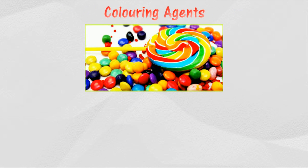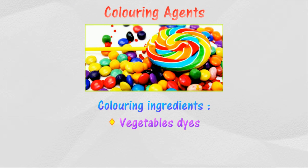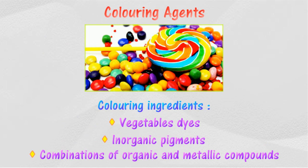Food additives: food coloring is added to enhance the visual appearance of food. Coloring agents use various ingredients such as vegetable dyes, inorganic pigments, and also combinations of organic and metallic compounds.